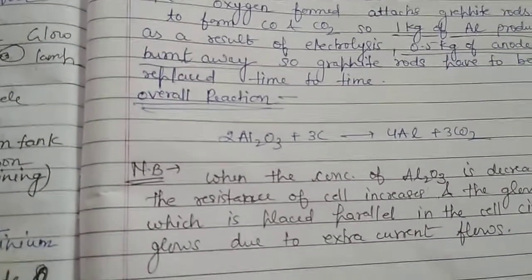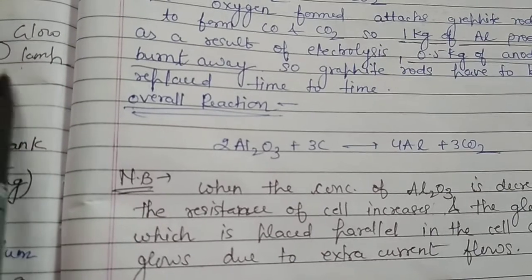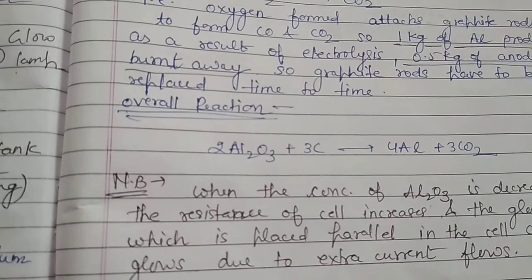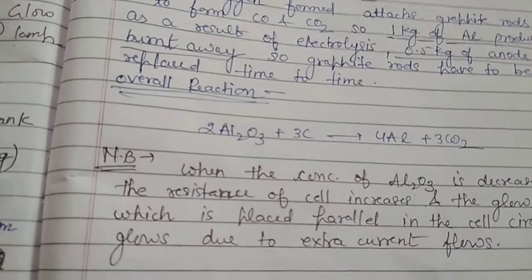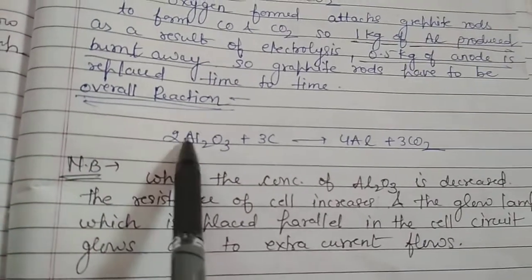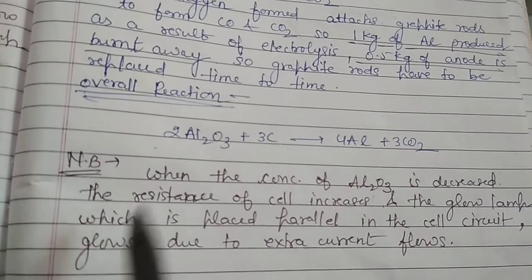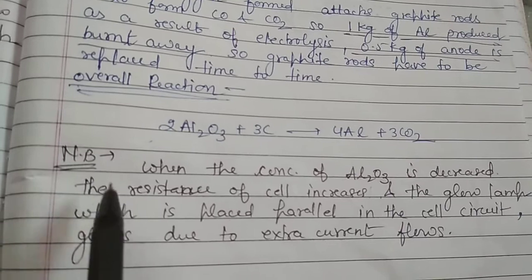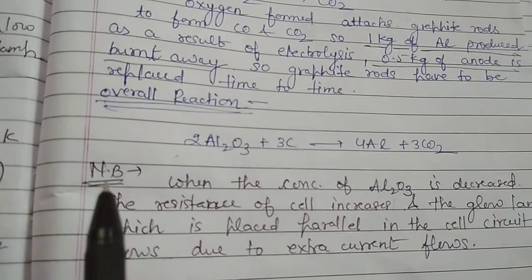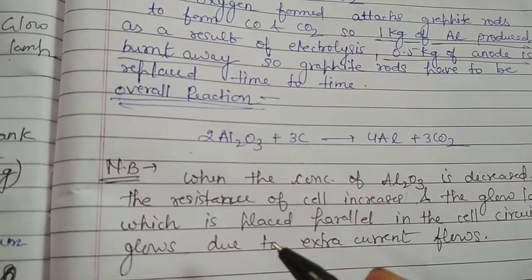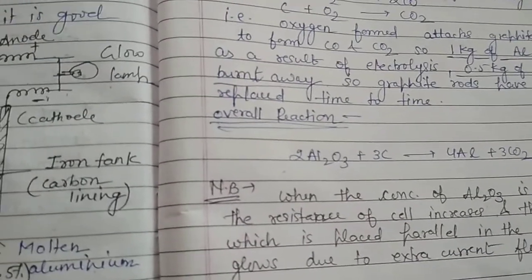We have also taken a glow lamp in the process, joined in parallel in the cell circuit. When the concentration of aluminium is decreased, the resistance of the cell increases and the glow lamp will glow as the extra current flows through it. We are then able to know that the concentration of alumina is low and we can add more alumina to the process. As we are getting only 99.5% pure aluminium, refining of aluminium can also be done by the Hoops process.